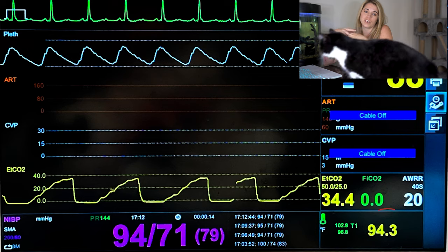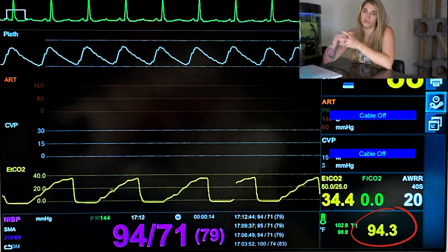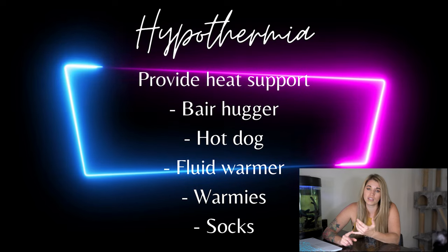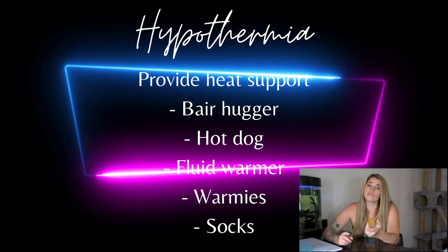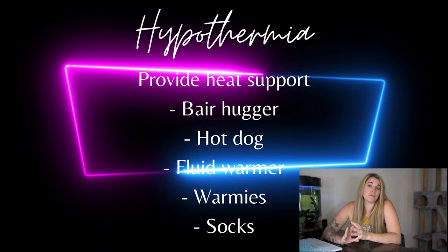Another vital that we should be monitoring during anesthesia is temperature. Unfortunately, temperature is one of the most difficult vitals to control. Anesthesia inhibits all of the patient's bodily mechanisms that are in place to keep them in a normothermic state, so most patients become cold during an anesthetic procedure. The only things we can really do is try to provide them with as much heat support as we can — tools like hot dogs, bear huggers, warmies, and fluid warmers. Keeping the patient warm is extremely important because a hypothermic patient will have a prolonged recovery and will be at an increased risk for an adverse event during the recovery period.